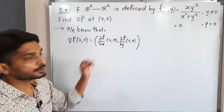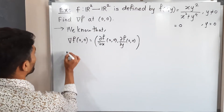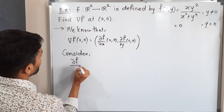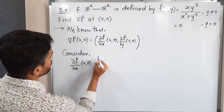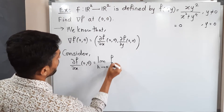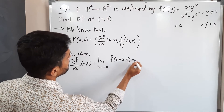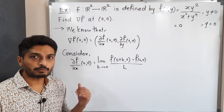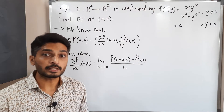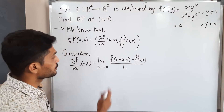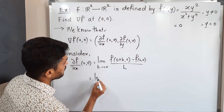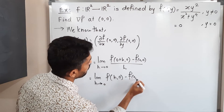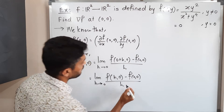Let us focus on the first partial derivative, ∂f/∂x. Consider ∂f/∂x at (0,0). By definition, this is the limit as h→0 of [f(0+h, 0) − f(0,0)] divided by h. Since we are taking the derivative with respect to the first component, we add h in the first component only. So this equals limit as h→0 of [f(h, 0) − f(0,0)] divided by h.